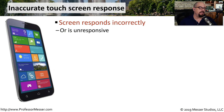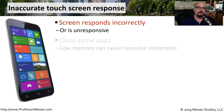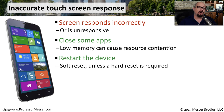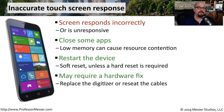Most of the input on our mobile devices is done through the touchscreen digitizer on the front of the device. Occasionally, you may be trying to click one part of the screen and another part responds, or perhaps nothing is responding at all. You can try closing some apps to free up resources, which might help with contention on the digitizer. It might also require a soft reset or hard reset to reset the digitizer. If the problem is with the digitizer itself, it would require a hardware replacement, which usually means replacing the entire screen.